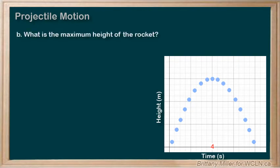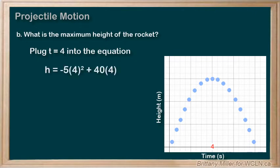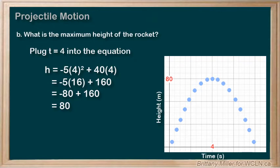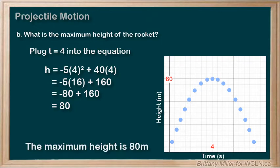To find out how high that maximum height actually is, we need to find h when t = 4. This is as easy as plugging t = 4 into our formula. So, we have -5 × 4² + 40 × 4, which is -5 × 16 + 160, which is -80 + 160, which equals 80 meters. So, the maximum height is 80 meters.